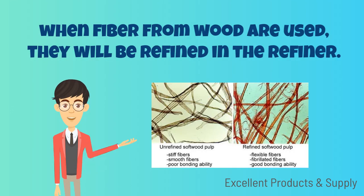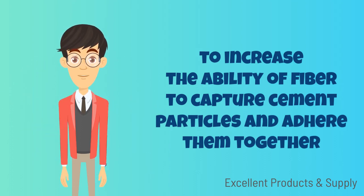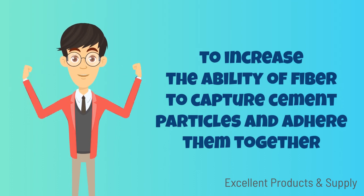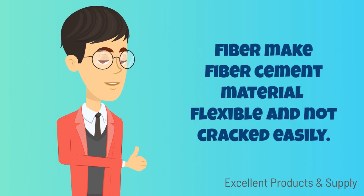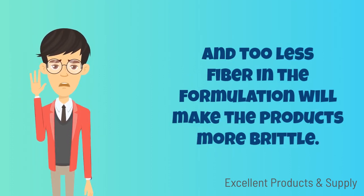When fiber from wood pulp is used, it will be refined in the refiner to increase the ability of the fiber to capture cement particles and adhere them together. Fiber makes fiber cement material flexible and not cracked easily. But too much fiber in the formulation will add cost and decrease strength properties, while too little fiber will make products more brittle.